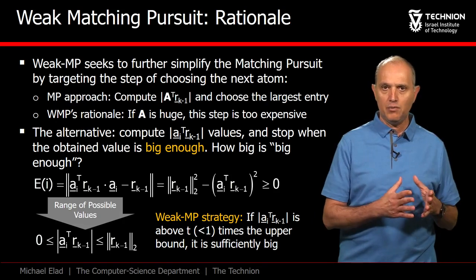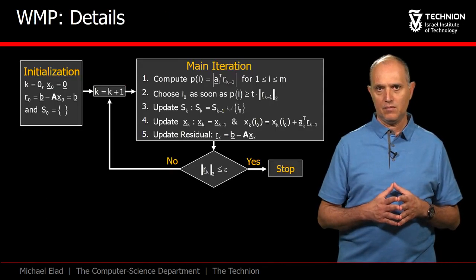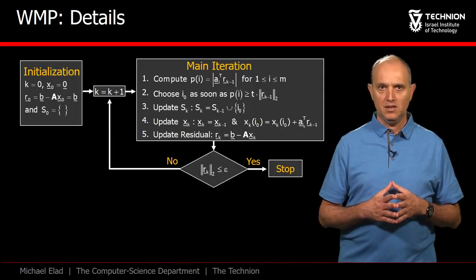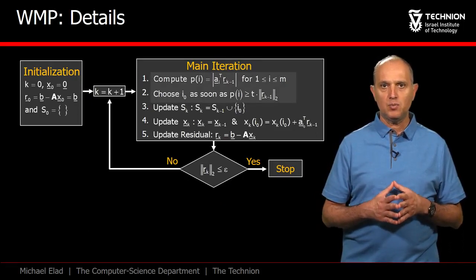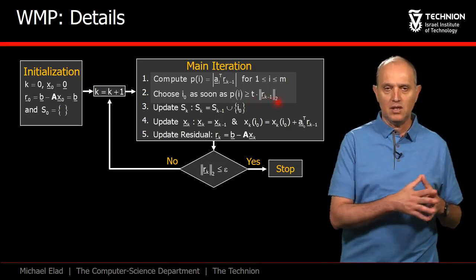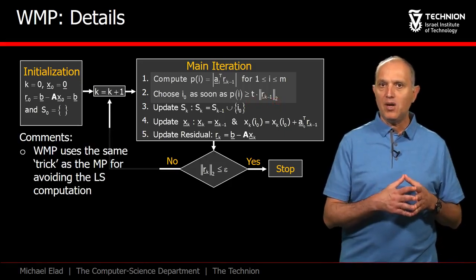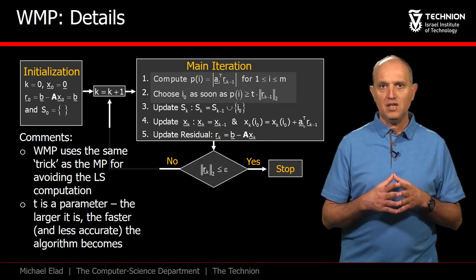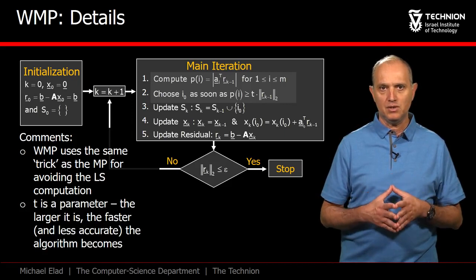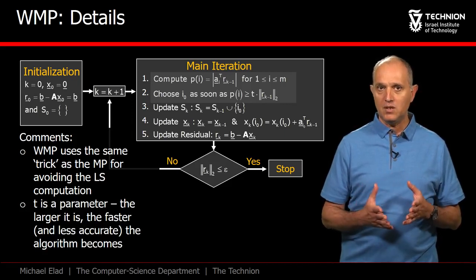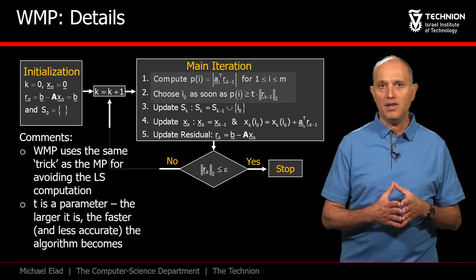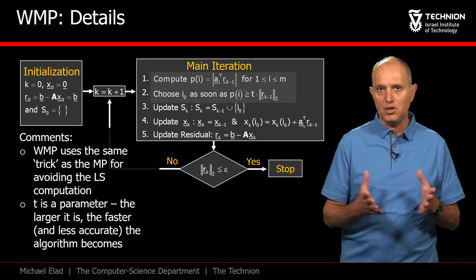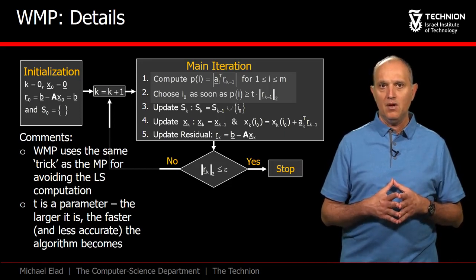Obviously, t is a value in the range 0 to 1. Here is the algorithm in full details. Starting from the MP, we modify the first two steps to perform a partial search governed by the threshold t times the residual norm. Observe that step 4 remains as the Matching Pursuit. The value of t dictates how crude this algorithm becomes. If t equals 1, this process will likely run through all the atoms, thus resulting in the Matching Pursuit algorithm. For t nearly 0, this algorithm will be very fast but choose poor quality atoms.